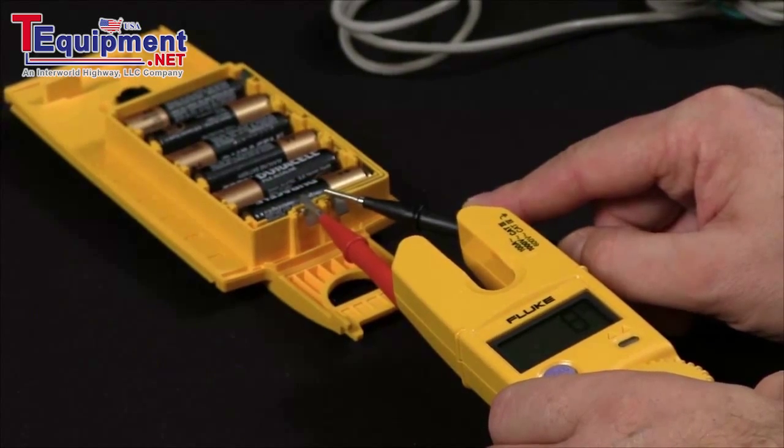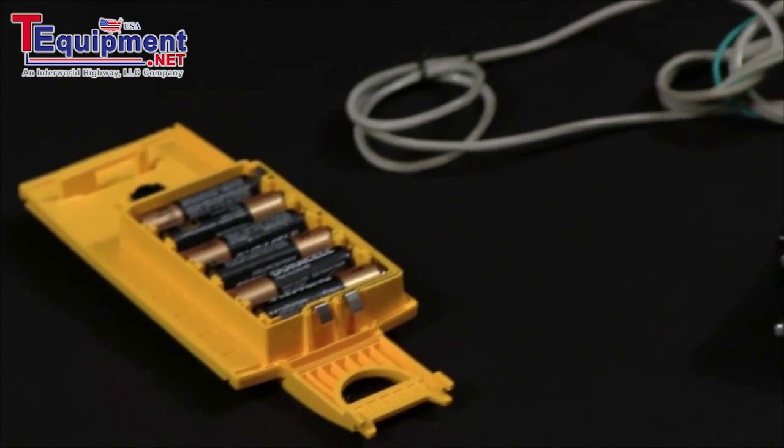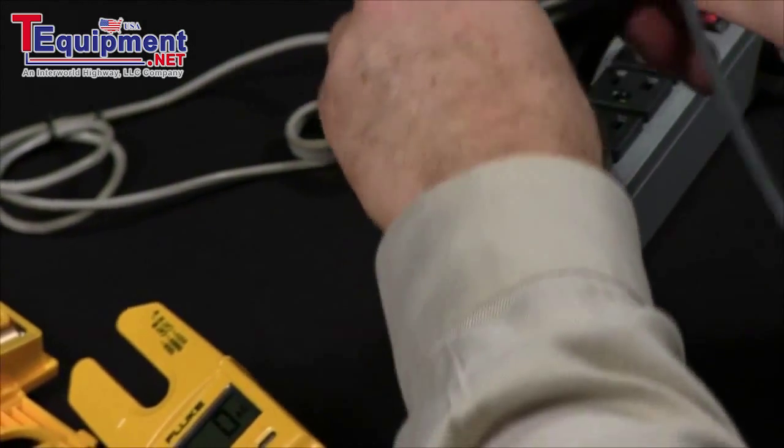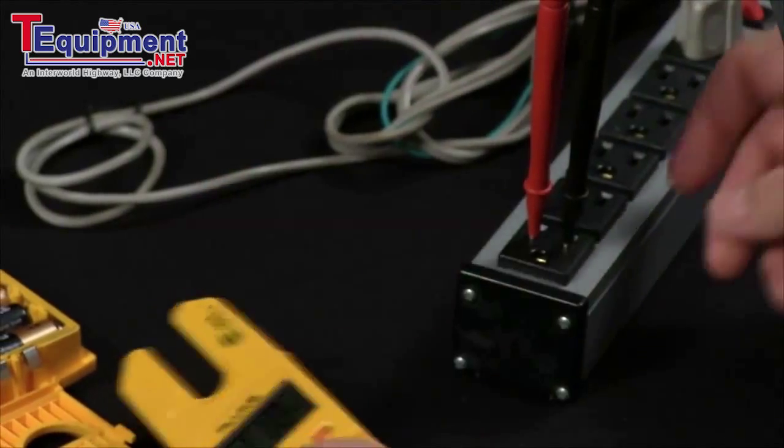To take an AC measurement, all I do is take my probe tips, and I can place them directly into the socket. And now I am measuring 118 volts AC.